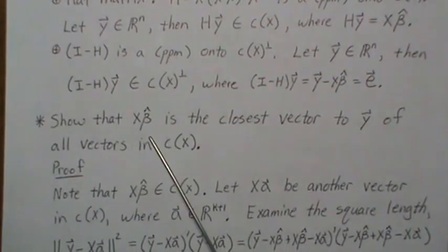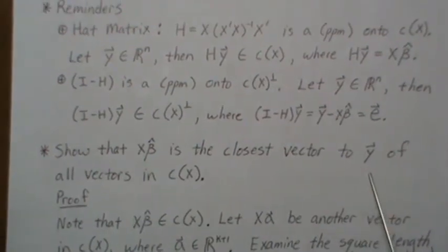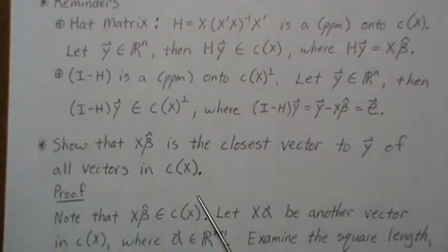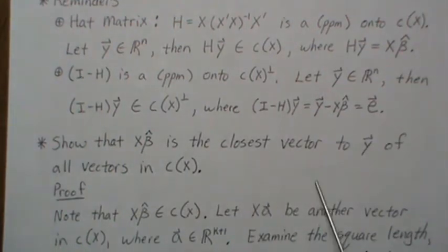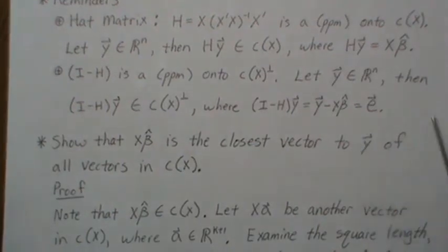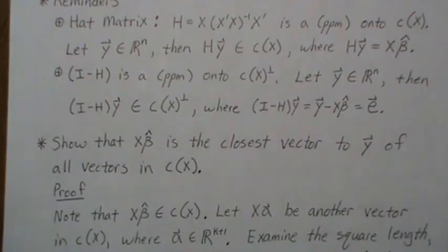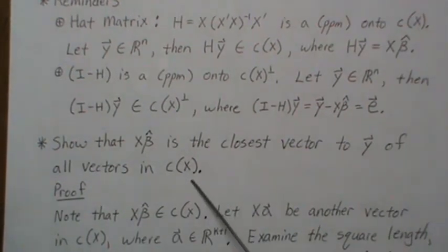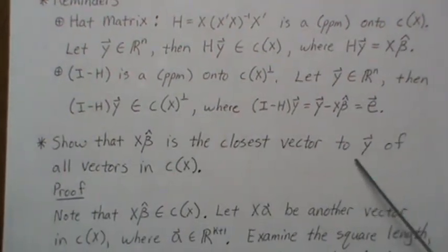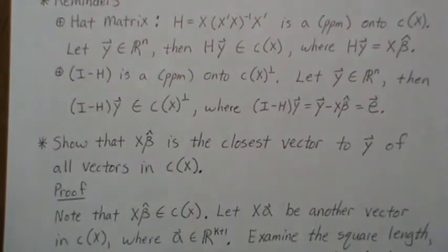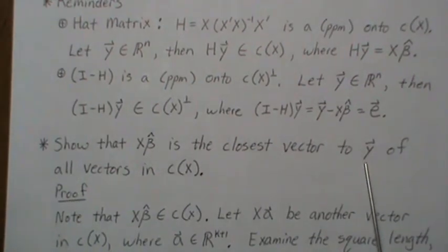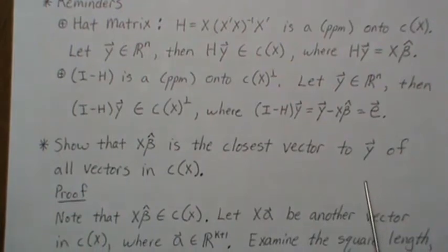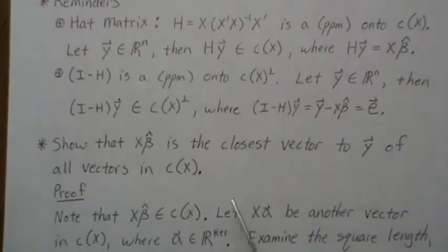Now we want to show that the least squares estimate is actually the closest vector to Y of all the vectors in the column space of X. We think of it as: Y is floating in n-space, and the column space of X is a hyperplane cutting through that space. We want to project Y onto the column space of X via the shortest path — that closest vector is what we'll show is X-beta-hat.